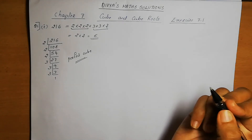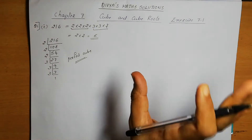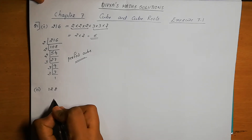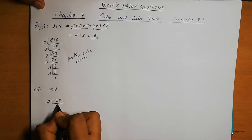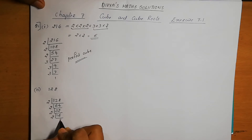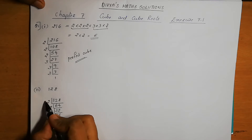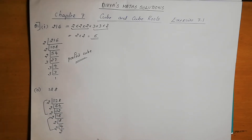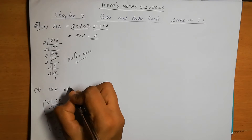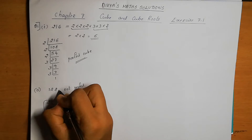The second number is 128. Taking its prime factors: 2 × 2 × 2 × 2 × 2 × 2 × 2. We can make two triplets of 2s, but one 2 is left over without a pair. Since one factor does not complete a triplet, 128 is not a perfect cube.